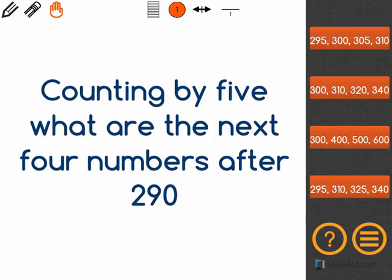The problem says, counting by 5, what are the next 4 numbers after 290?